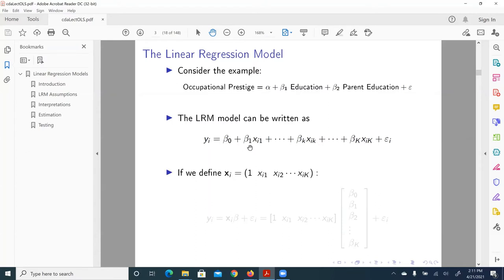And we can also condense this formulation a little more. Because here, theoretically speaking, the k can go to infinite. Then our formulation can be quite tedious and complicated. So in this case, we can define xi to be a vector, or a matrix vector, that contains the unit column and all variables. So we simply use x to denote all these independent variables. Then for yi, we can simply formulate as xi multiplied by beta plus epsilon i, the error term epsilon i.